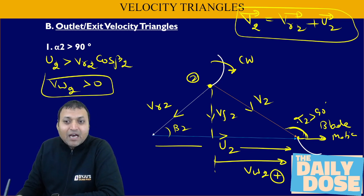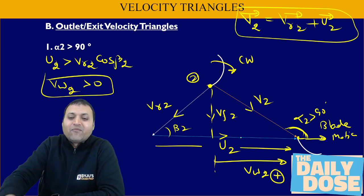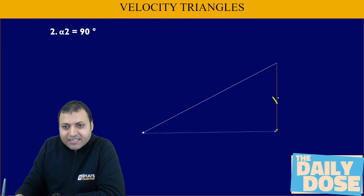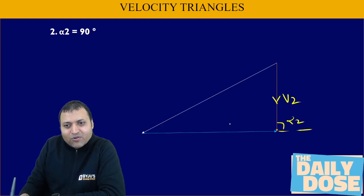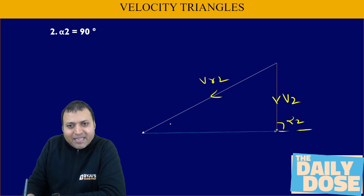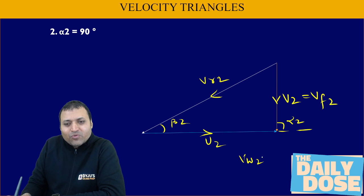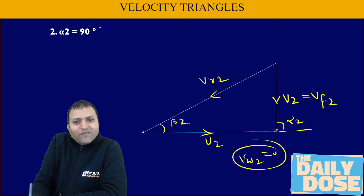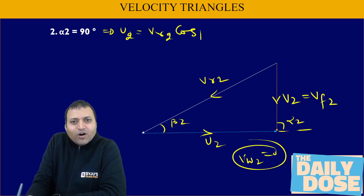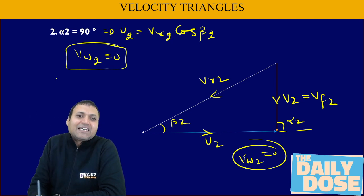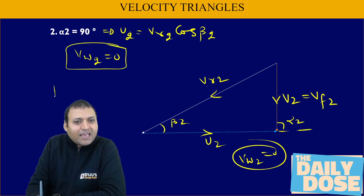When alpha 2 equals 90°, v2 becomes vertical. vr2 retains its direction, with angle beta 2 at the blade and u2 pointing right. Resolving v2 into two components gives vf2, and vw2 equals 0. So alpha 2 = 90° implies u2 equals vr2·cos(beta 2), or vw2 = 0. This is the common case of the reaction turbine, where discharge is without whirl.